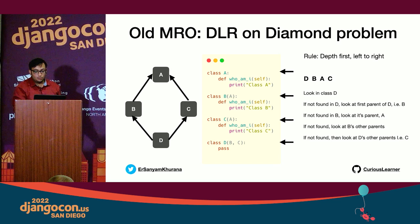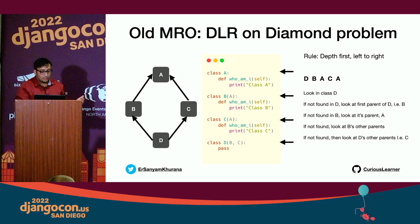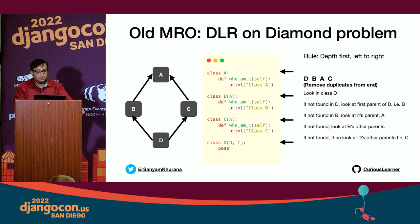So Python asks C: do you have this method or attribute? If so, done. If not, it looks at C's parent, which is A. So the MRO becomes D, B, A, C, A — then you remove duplicates from the end, giving you D, B, A, C. That is the class lookup hierarchy.